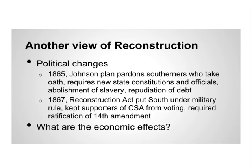Johnson himself pardoned about 13,000 people in the first year of this plan alone. He also required that any state wanting to return to the Union had to create a new state constitution and elect a totally new slate of officials — governors, congressmen, all of them had to be re-elected. His plan would also abolish slavery and repudiate the Confederate debt, meaning debt owed to the Confederate government would be cancelled. If this doesn't sound familiar, look at Chapter 12, Section 1.